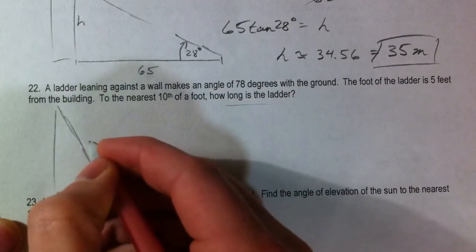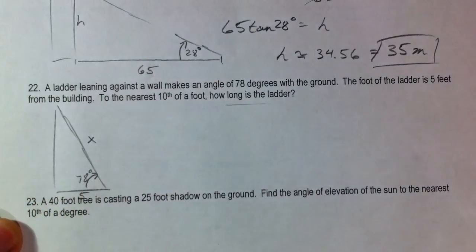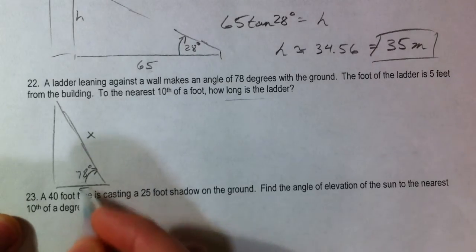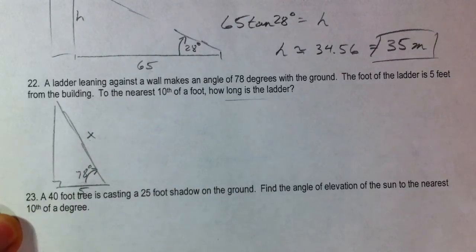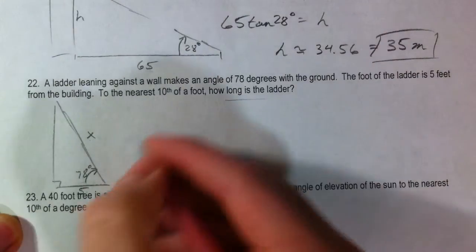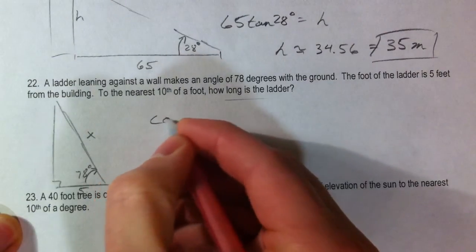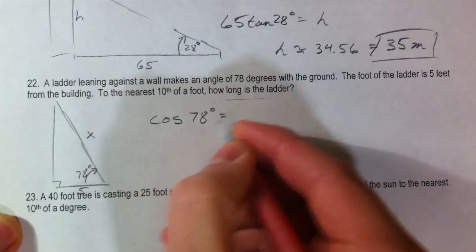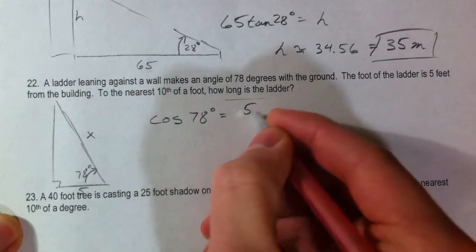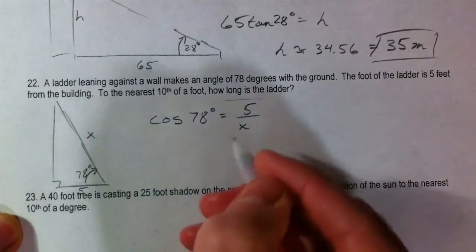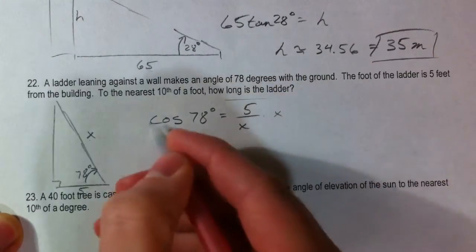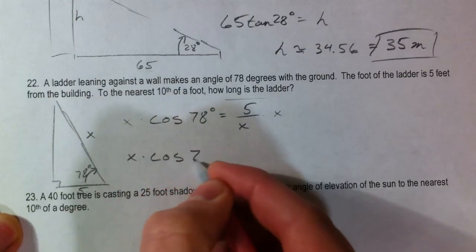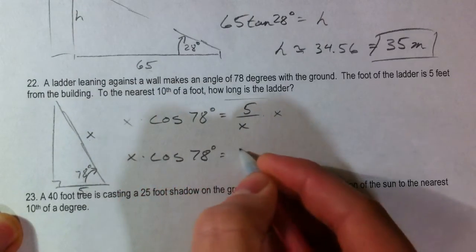So not how tall is the building, how long is the ladder? So let's call that x. And we know adjacent to the angle, and we know the hypotenuse. So we're going to use cosine of 78 equals 5 over x. So first thing I'm going to do is multiply both sides by x, because x is stuck in the denominator. x times the cosine of 78 equals 5.